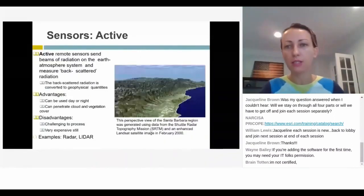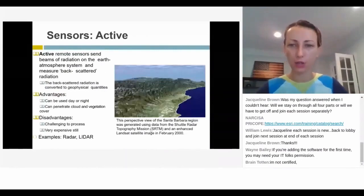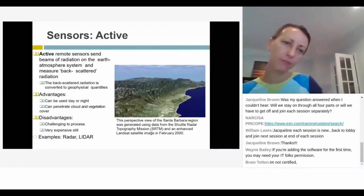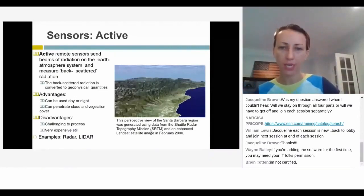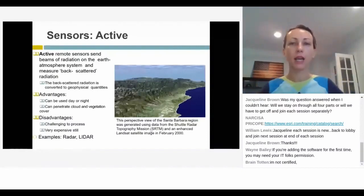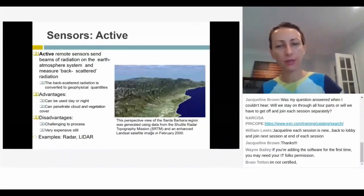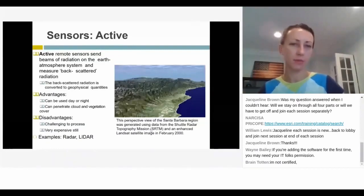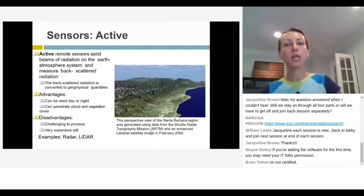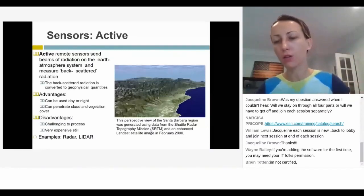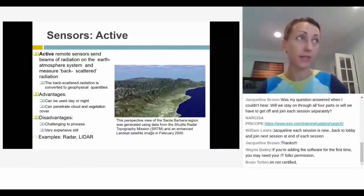Then we have the active sensors — think lidar or radar. An active sensor sends out a beam of energy and records the return. Lidar drones are increasingly common, though radar is still very expensive and heavy. What's cool about active sensors is that they can operate at night just as well, they don't need the sun, and they can actually penetrate through clouds and vegetation — which is why a lot of people use them.